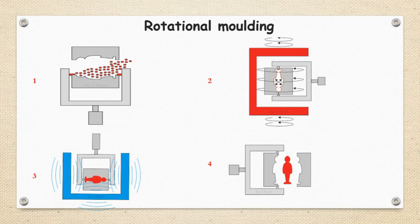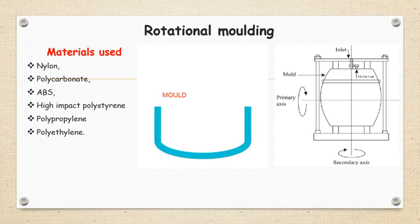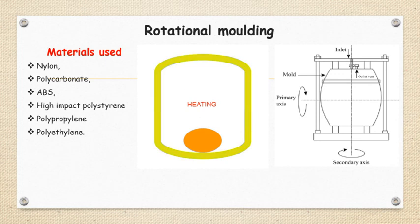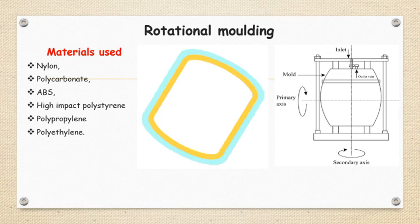You will get the component of exact size and shape as that of your mold cavity. Next, we will observe it through one animation. The plastic raw material is placed inside this cavity. It is rotated, and by this rotation it will get the shape of this mold cavity.